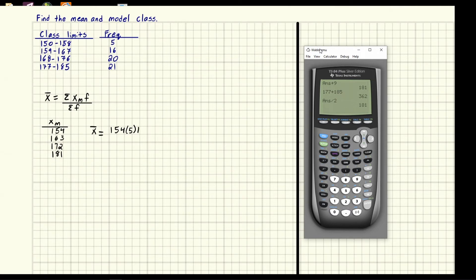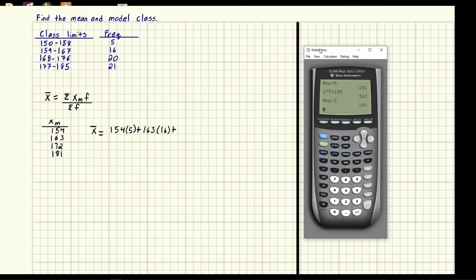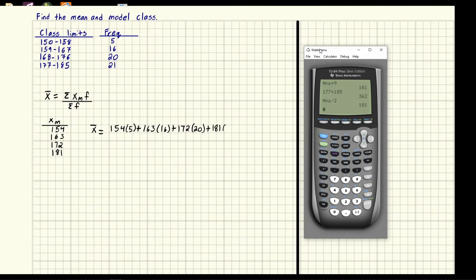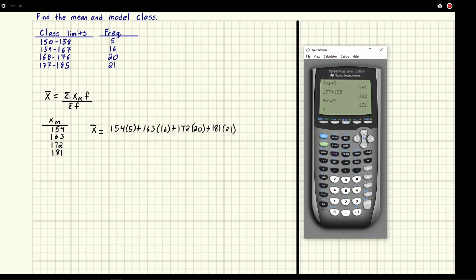And then it says okay we did this middle part now it says add, that's what the sigma means. So add the next piece. So now we go to the next midpoint which is 163 times the next frequency which is 16. And then we go add because that's what sigma says to do. We did this add it to the next one. So we say okay well the next one is 172 times 20 the next frequency. And then it says add because we did it again. Then we have 181 times 21. And then at this point we're all out of midpoints. There's no more. So we're all done. So the sigma ends because we ran out of stuff.